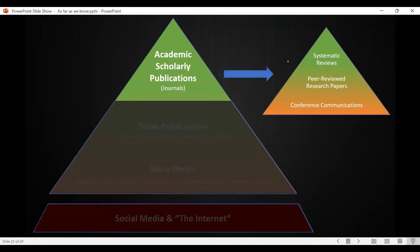Within academic publications there is also a hierarchy. At the very top we put systematic reviews, which collect massive amounts of information about a topic over a long time and reach a conclusion — a state of the nation. Below that are peer-reviewed research papers, where other scientists evaluate the work as a form of quality assurance, though they tend to be on smaller studies. At the bottom of this pyramid are conference communications, which are a strong form of communication but are quite often not peer reviewed — if you find one online, handle with care.